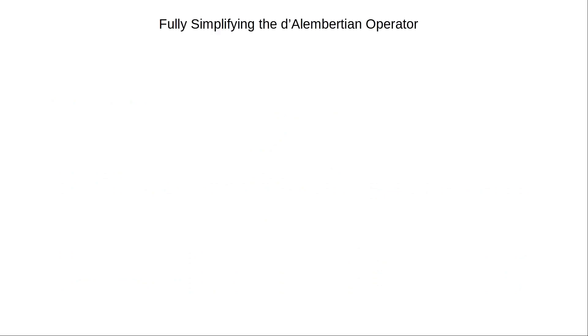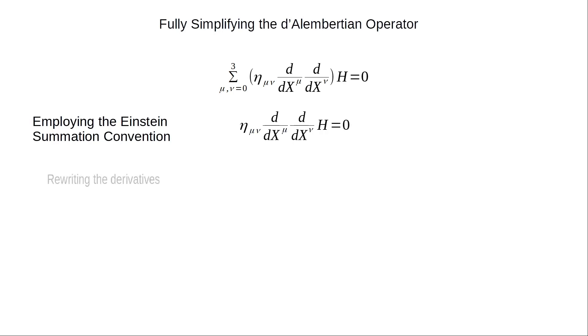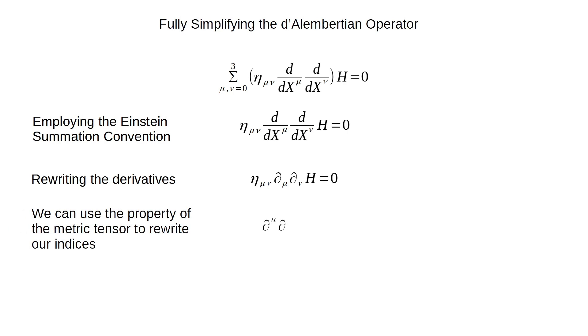Now we're ready to fully simplify the d'Alembertian operator. Here's our original equation. We use the Einstein summation convention to get rid of the sigma notation, then simplify the derivatives. We can use a property of the metric tensor to rewrite the indices. Now we have del upper mu, del lower mu times the Hamiltonian equals zero.